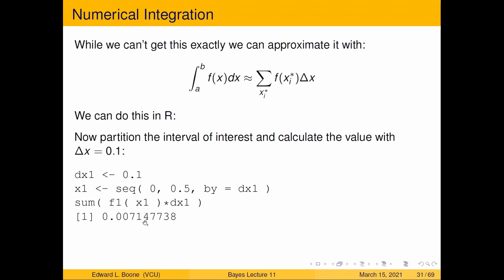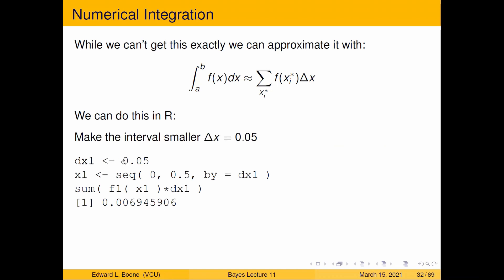Now like we mentioned before, if I make the widths narrower I should get a better or more accurate value. So I'm going to change delta x. So I change delta x to 0.05. I don't have to really change anything, just change that number and run it again and I'll get 0.0069.